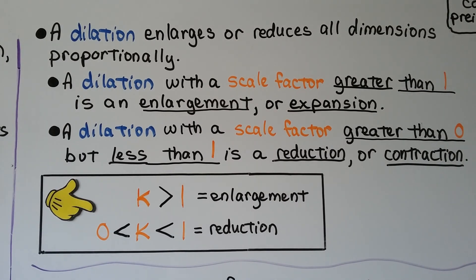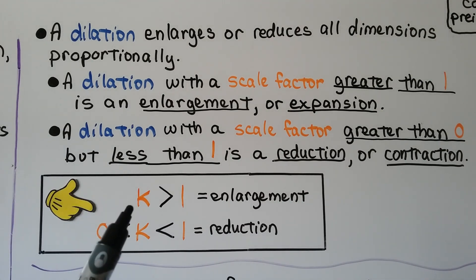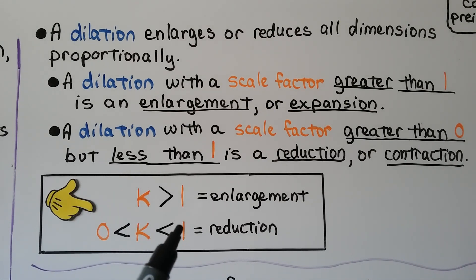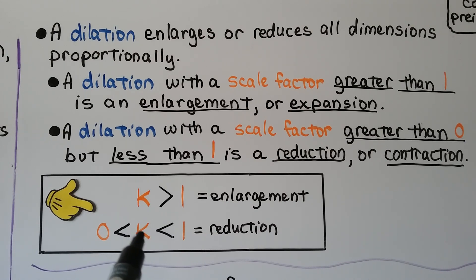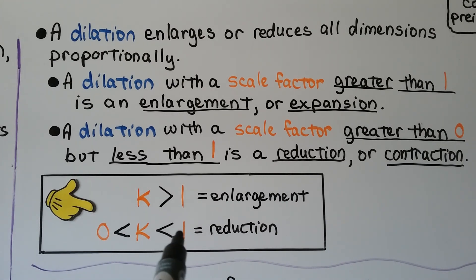A dilation enlarges or reduces all dimensions proportionally. A dilation with a scale factor greater than one is an enlargement or expansion. A dilation with a scale factor greater than zero but less than one is a reduction or contraction. So if the scale factor k is greater than one, it's an enlargement; if k is greater than zero but less than one — like a fraction such as one-half, one-third, or fifteen-sixteenths — it's a reduction.